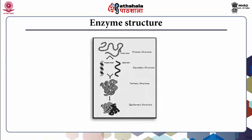This slide shows us the various components of enzyme structure. Enzymes basically have four levels of structure as shown in figure 1. These levels are primary structure, secondary structure, tertiary structure, and quaternary structure. The enzyme structure ranges from a basic amino acid sequence to a three-dimensional structure in a folded protein. The amino acid sequence in polypeptide chains in each enzyme is distinct and determines the three-dimensional shape as well. It is this 3D structure of an enzyme that determines the enzyme's activity.